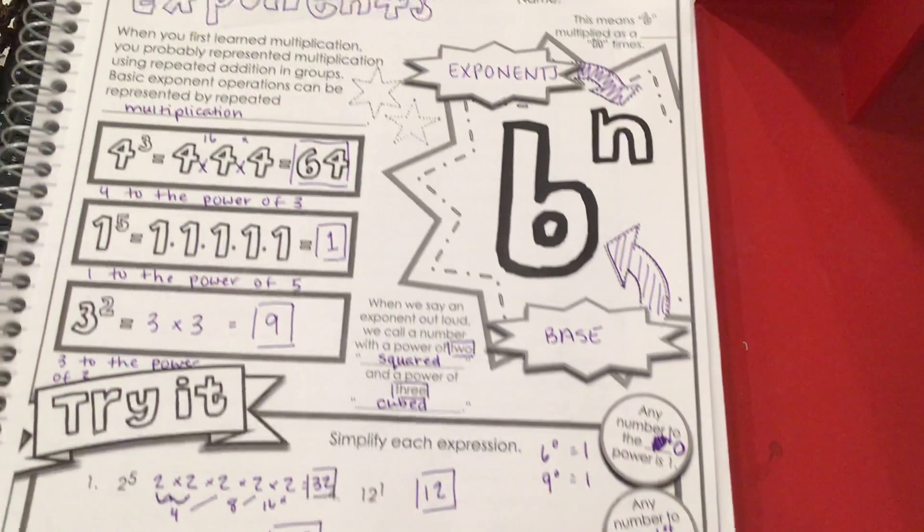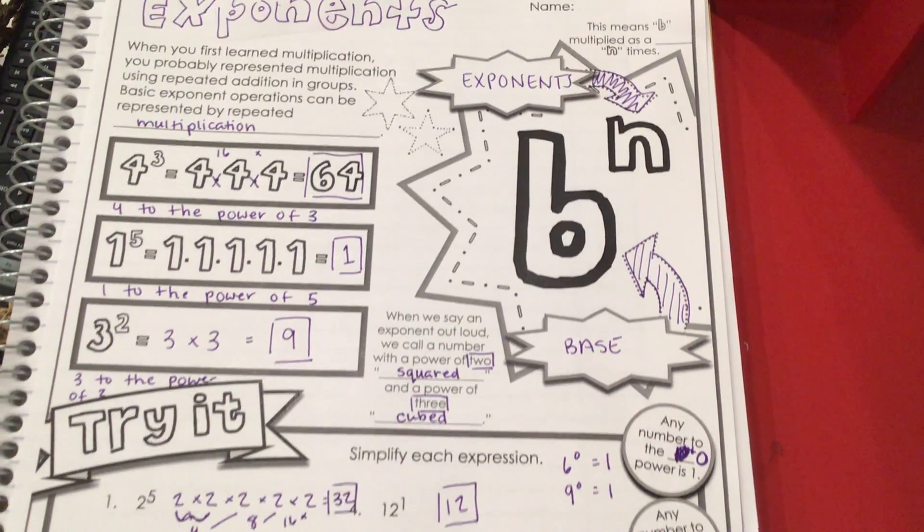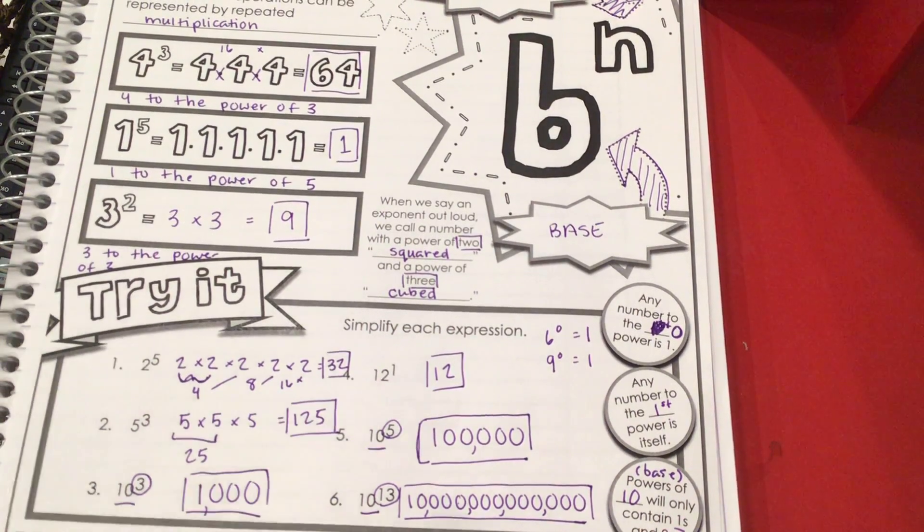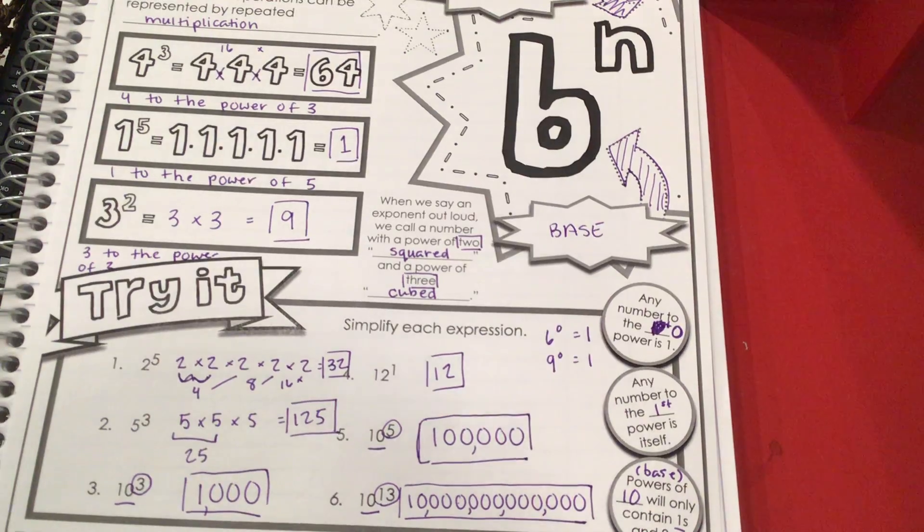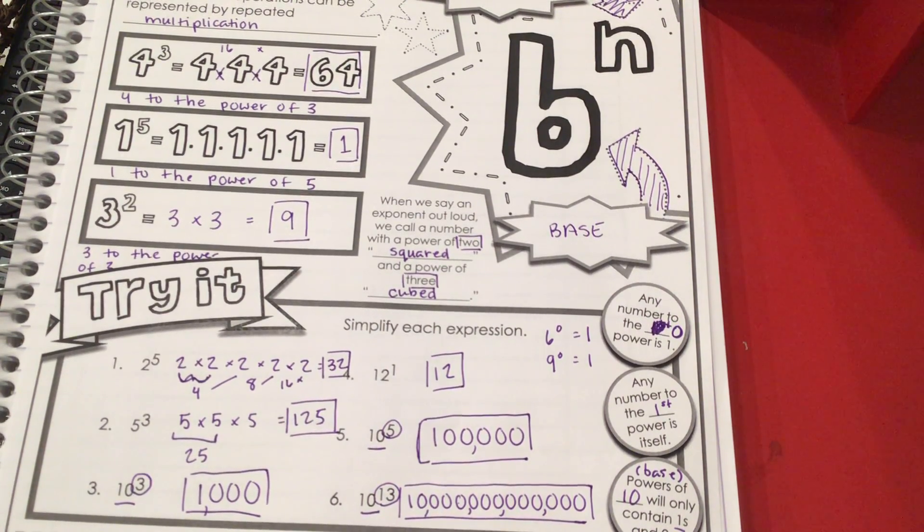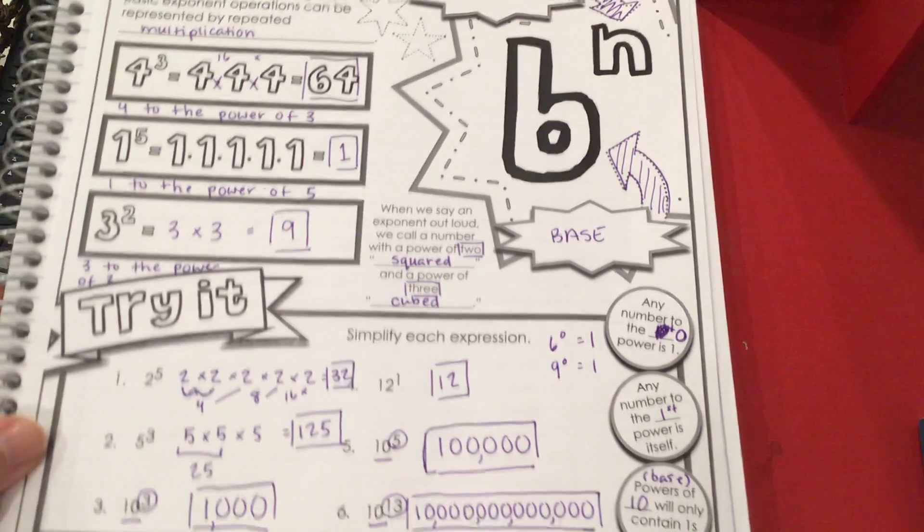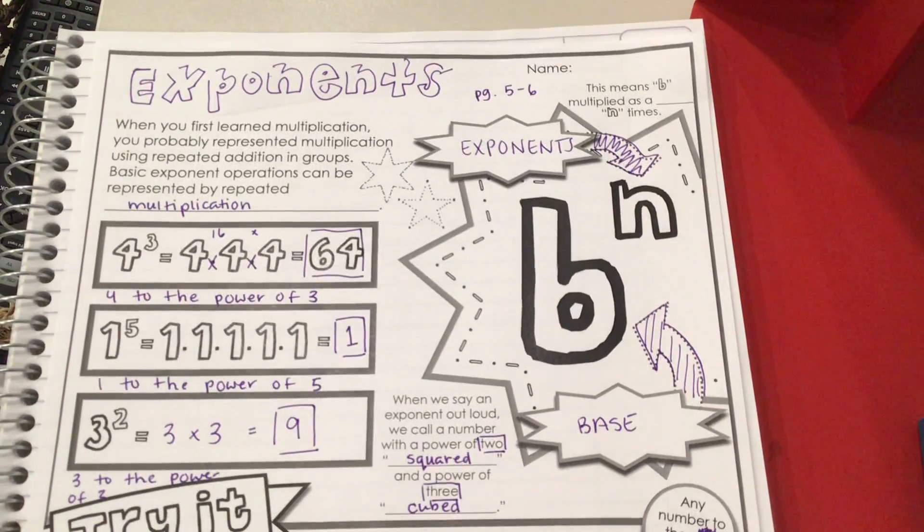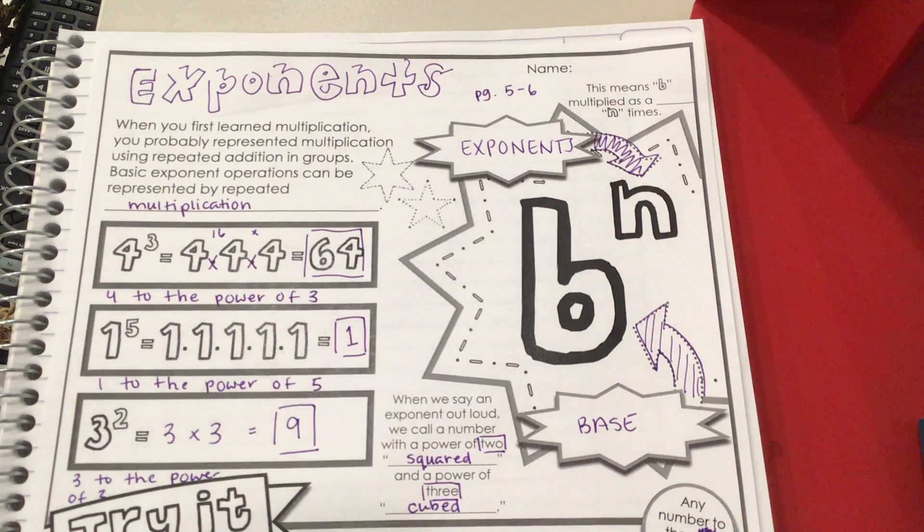We already did the first activity in our workbook the other day when you were at school. Today, after you watch this video, you're going to do page number 5 and page number 6. So you need to do page 5 through 6. That is all for this lesson. There will be a second part assigned to you on Friday. Let me know if you have any questions. Bye, Hunter.